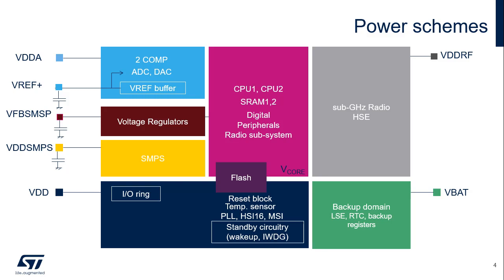VDD-SMPS supplies the switch mode power supply step-down converter. Its output, VFBS-MPS, supplies the CPU with most of the digital peripherals and the SRAMs. The flash memory is supplied by both VFBS-MPS and VDD.